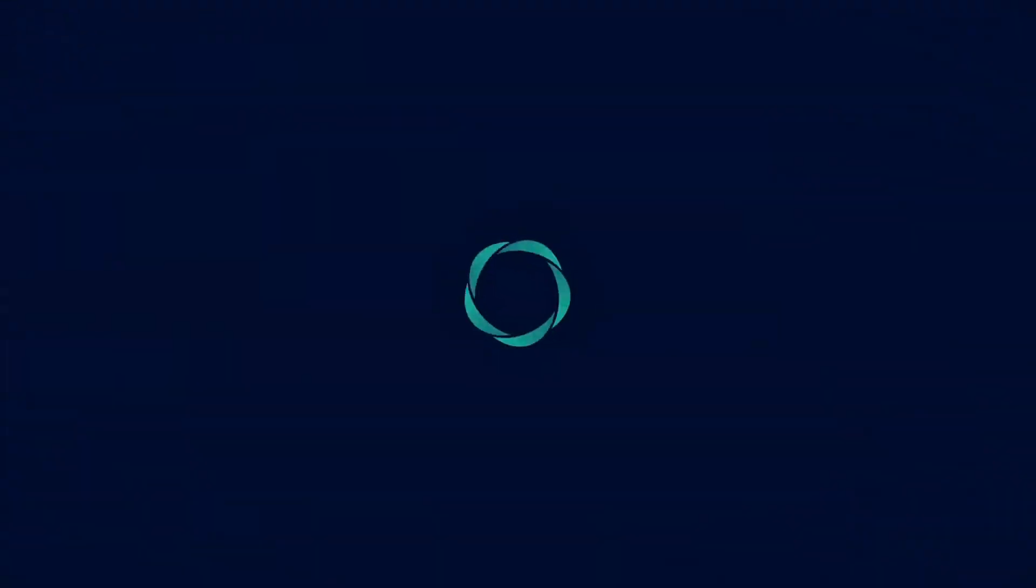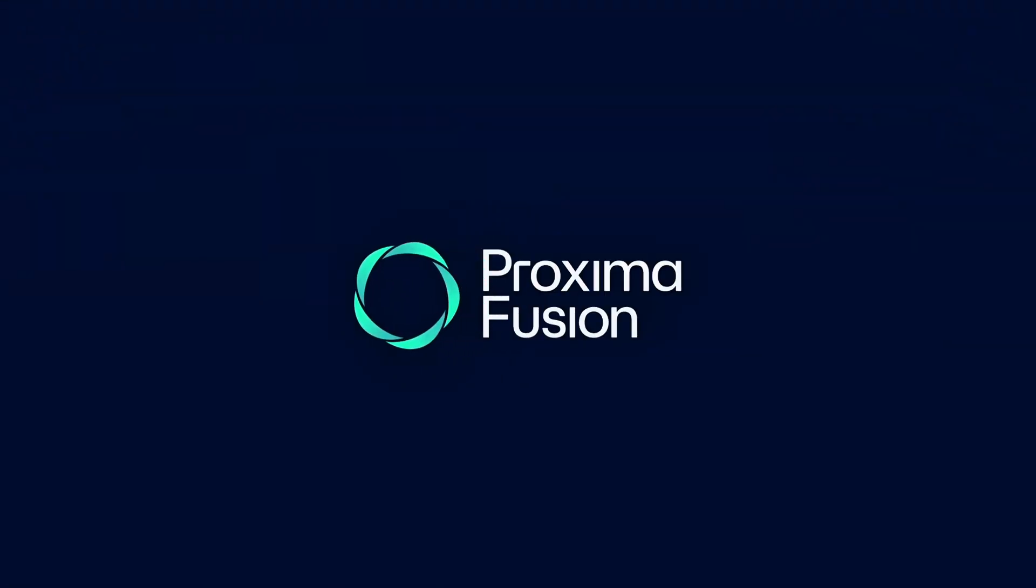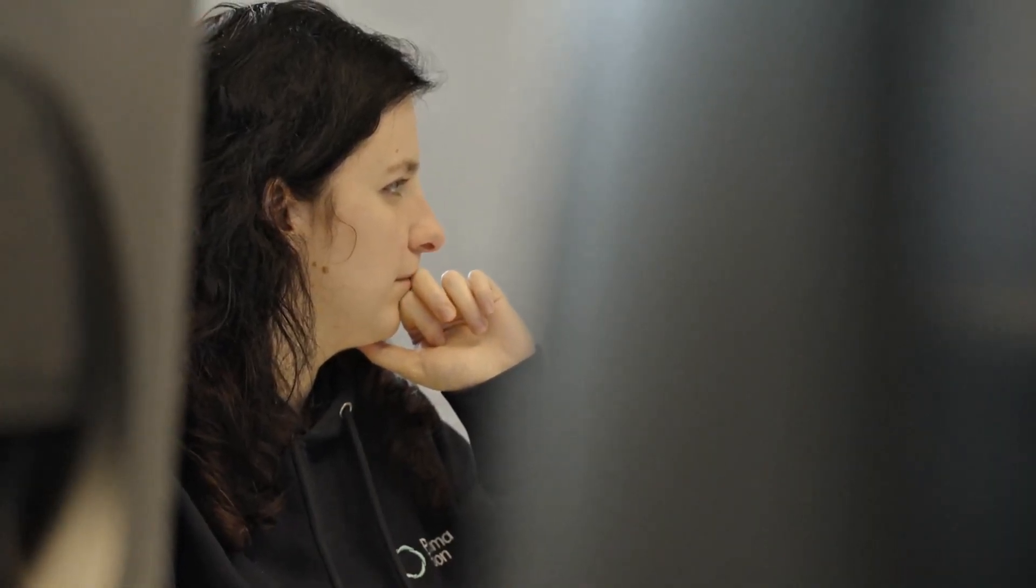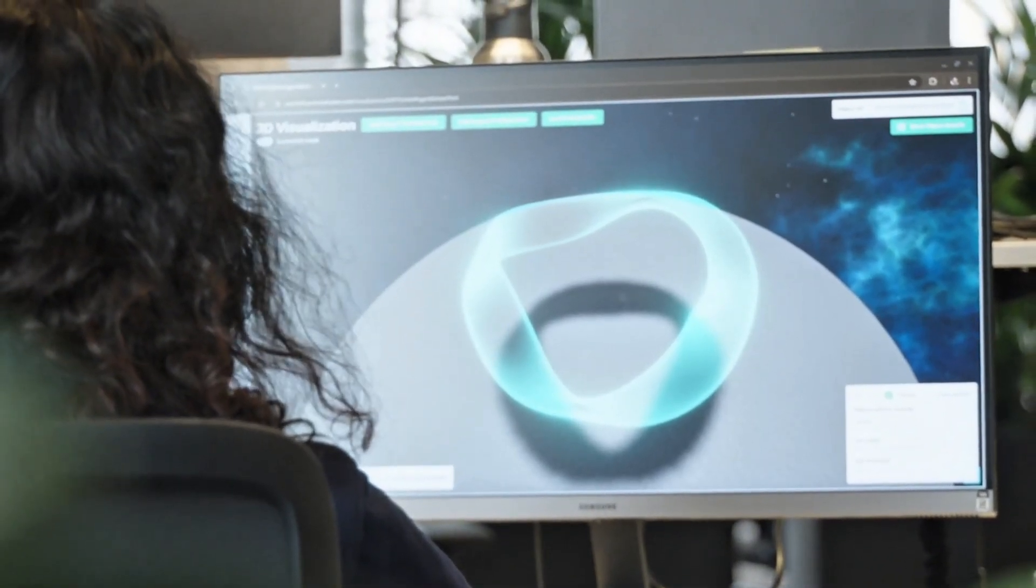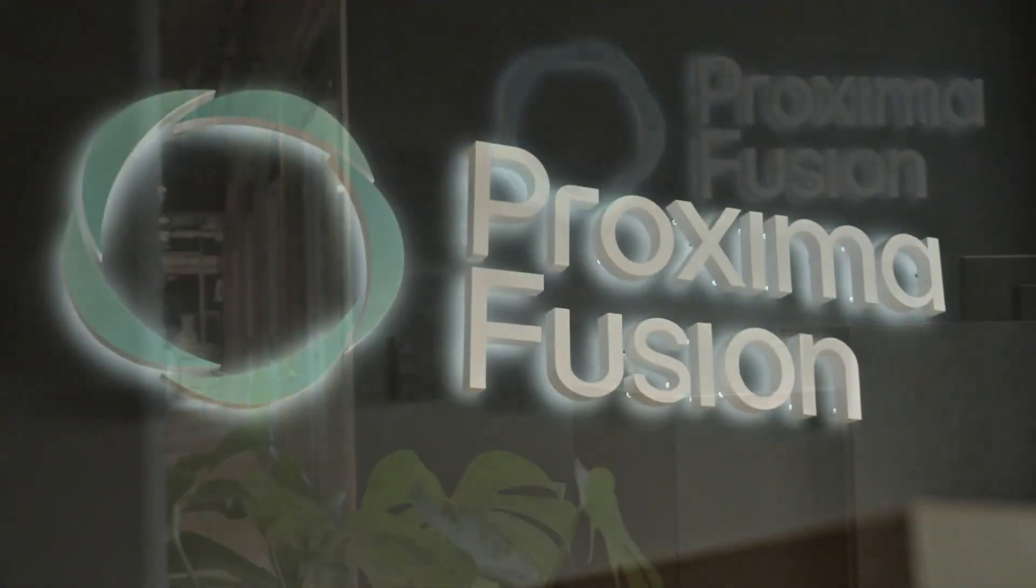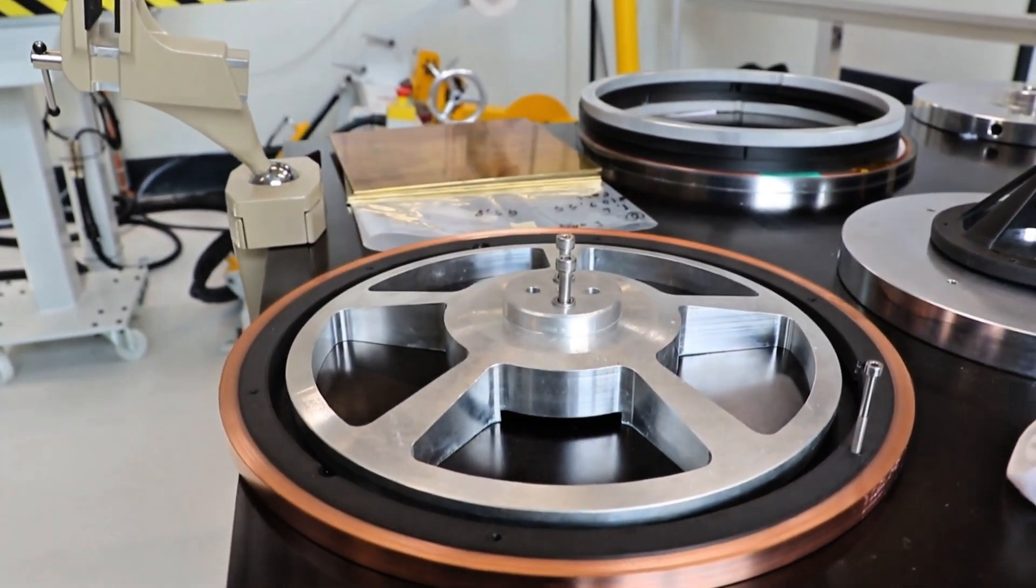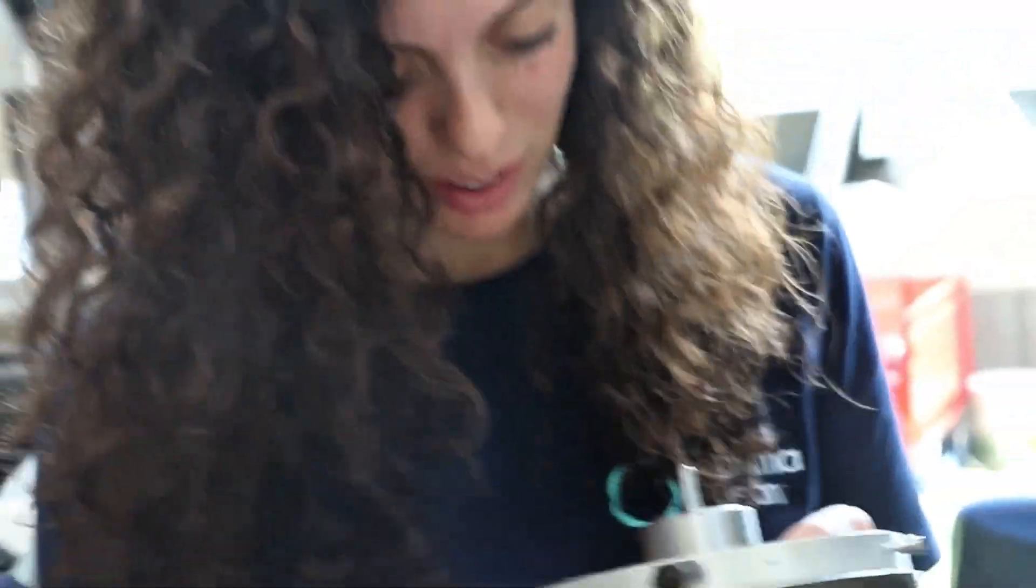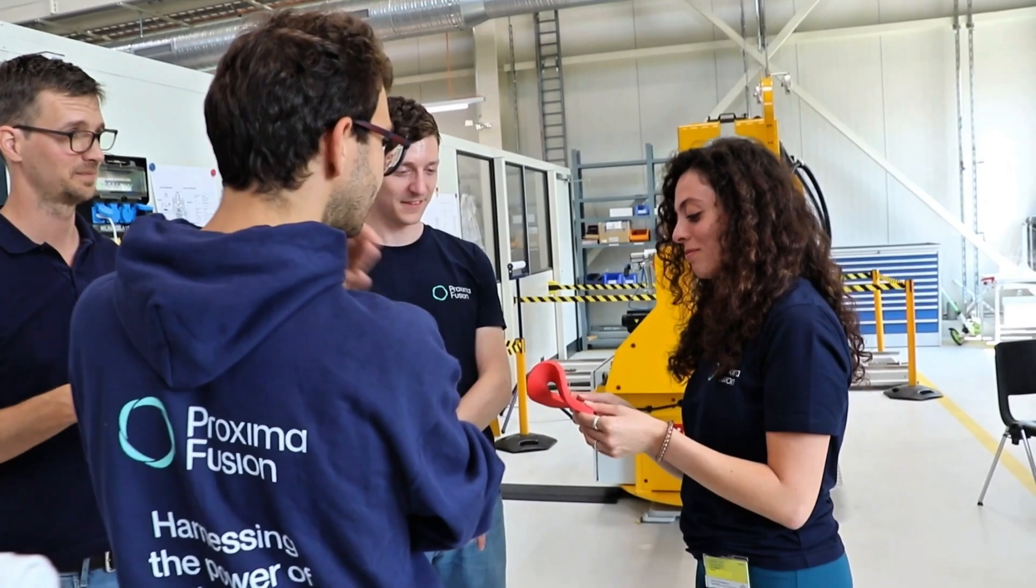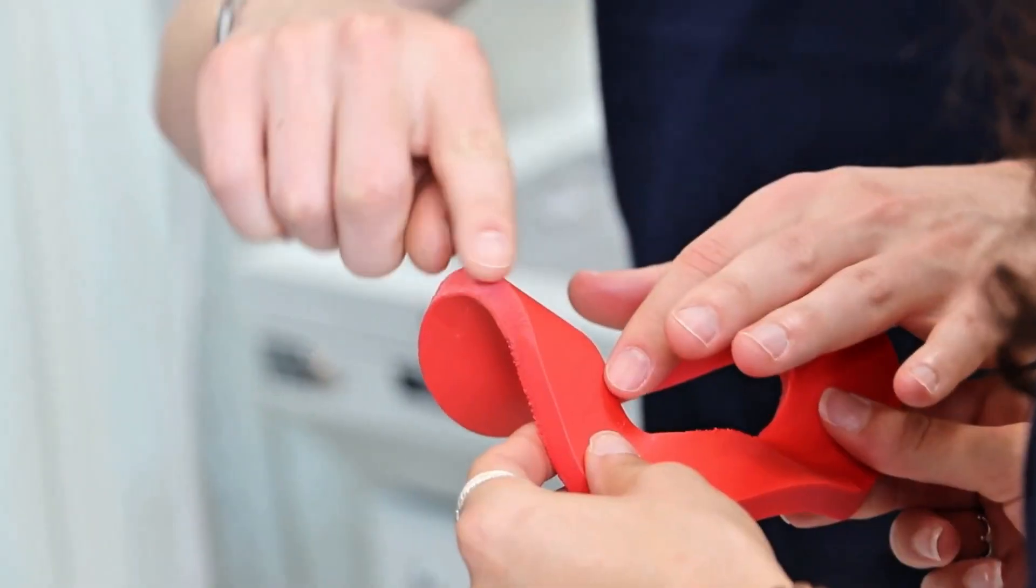One startup at the forefront of this effort is Proxima Fusion, a German company aiming to build the first generation of fusion power plants. Proxima Fusion describes itself as Europe's fastest-growing fusion startup. Combining cutting-edge research with a vision for an energy revolution, their approach is based on a special kind of device called a stellarator, which could be the clearest path to putting fusion energy on the grid.